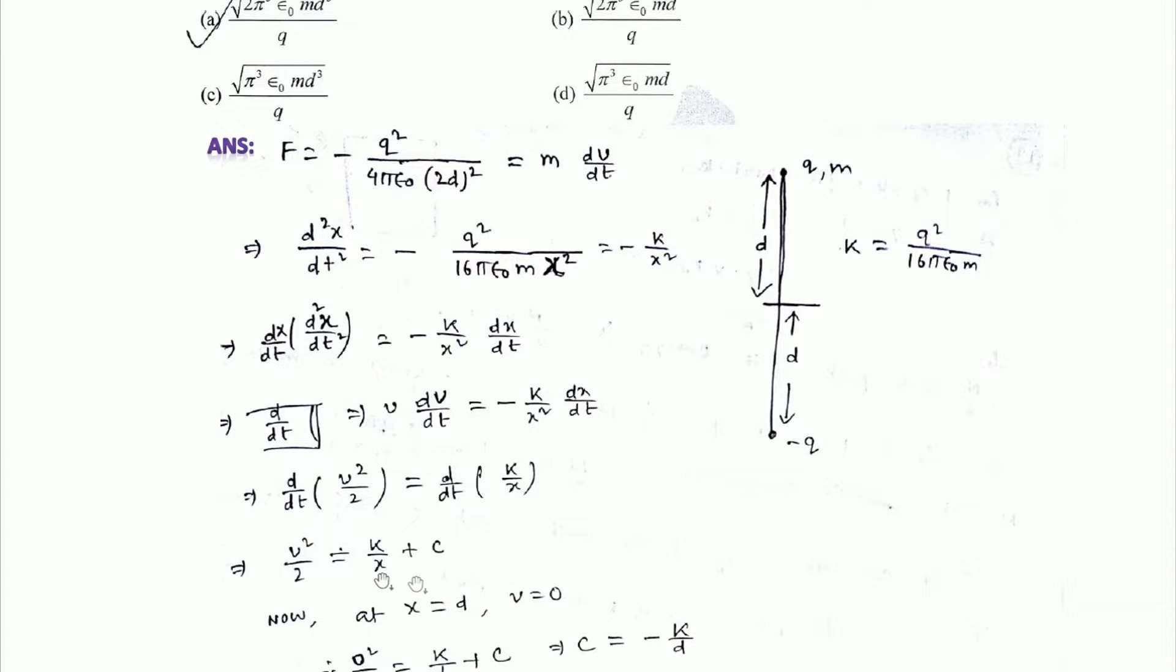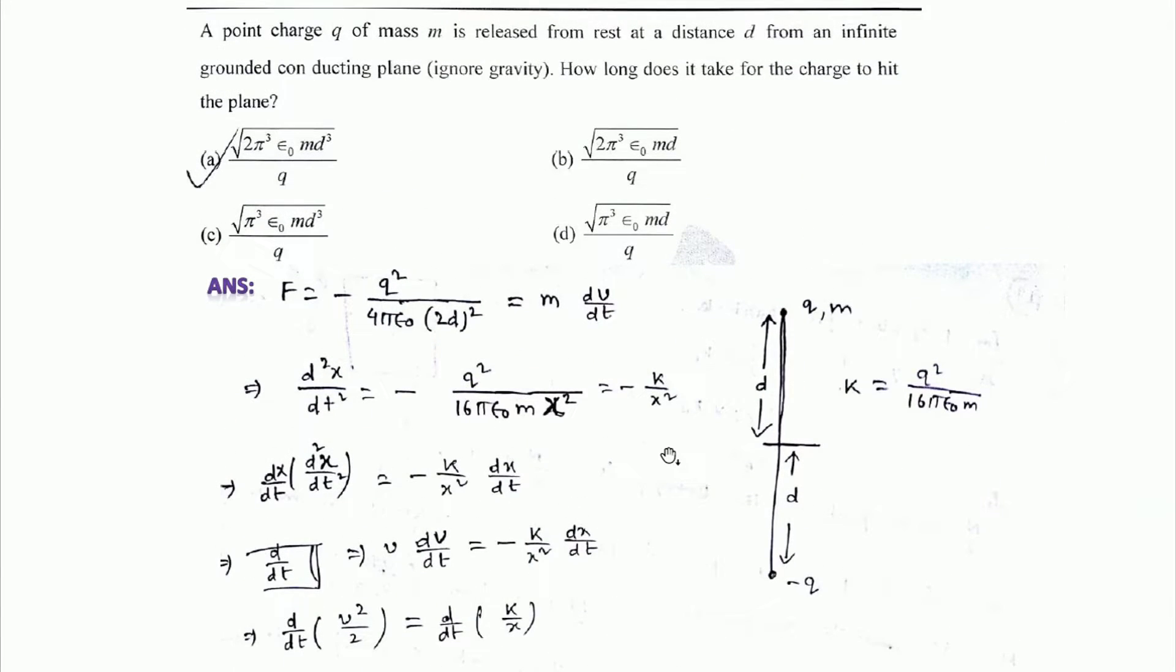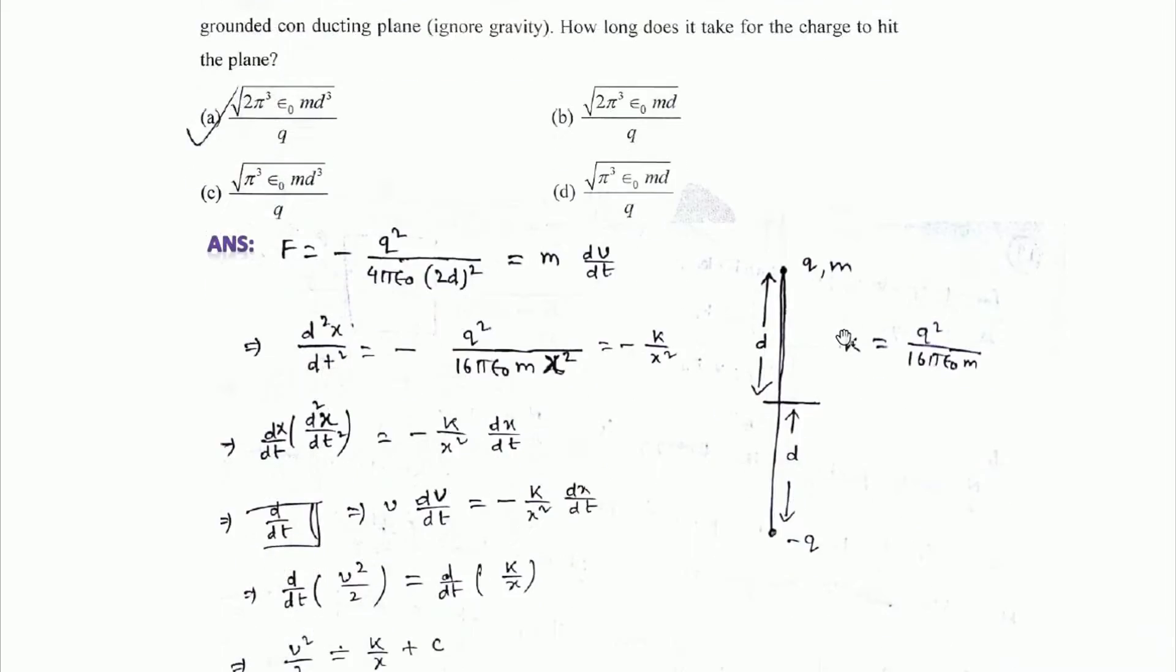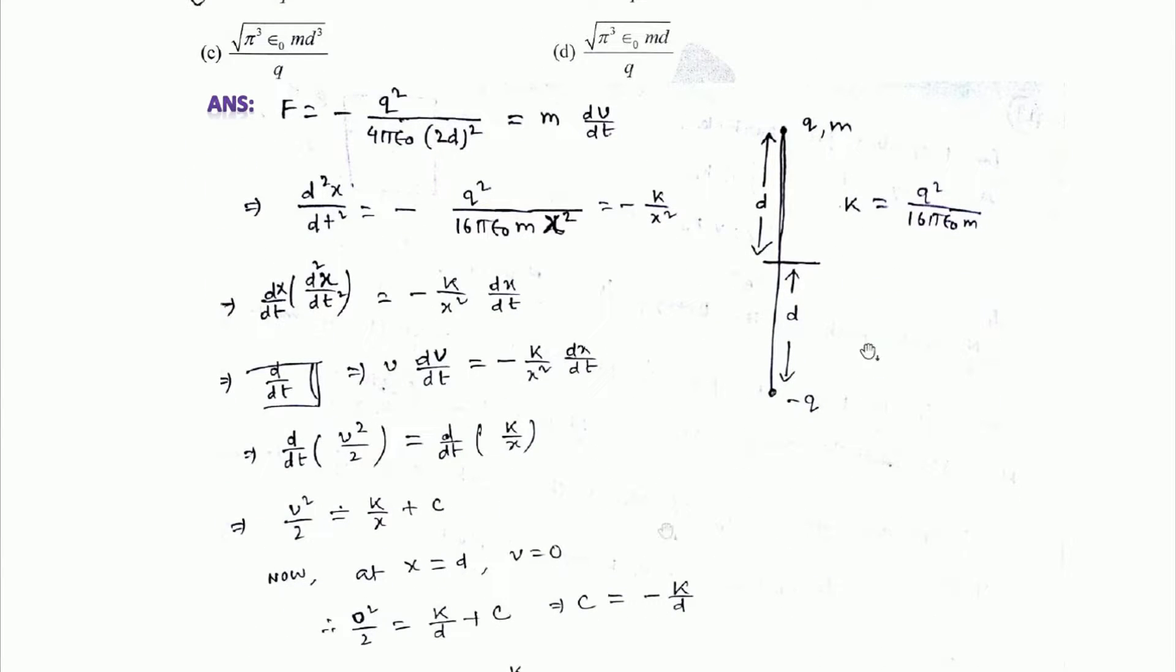We have to remove the constant using the conditions given in the question. The particle was released from rest, so at x equals d, the velocity v equals 0.